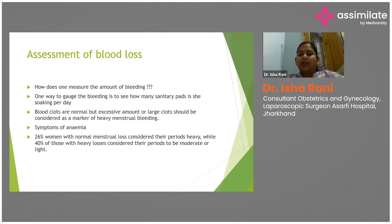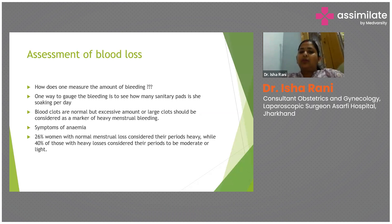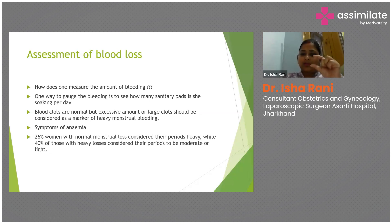Blood clots are normal because they represent the shedding of endometrial tissue — what the patient appreciates as blood clots. However, we cannot ignore the amount and size of clots passing. While taking history, it is very important to inquire about the approximate size of clots; patients can use vegetable size comparisons or hand gestures to describe the size of the clot.